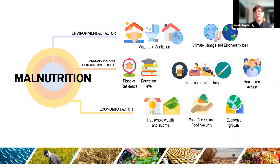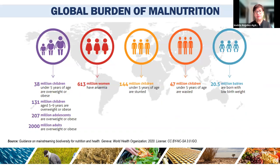The global burden of malnutrition is alarming. 38 million children under five years old are overweight or obese, 131 million children aged five to nine years old are overweight, and 207 million adolescents are overweight. About 2 billion adults are overweight or obese. Regarding anemia, about 613 million people are affected, and about 144 million children under five are stunted, while about 47 million children under five are wasted.